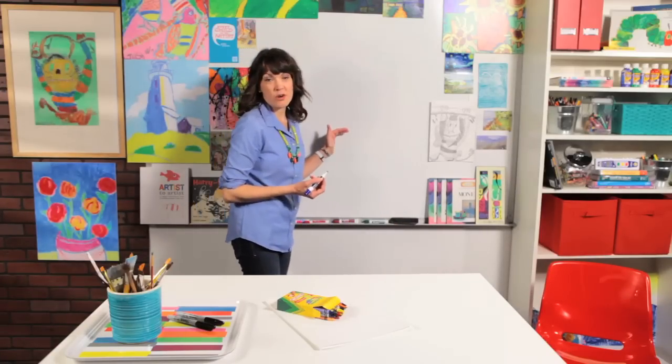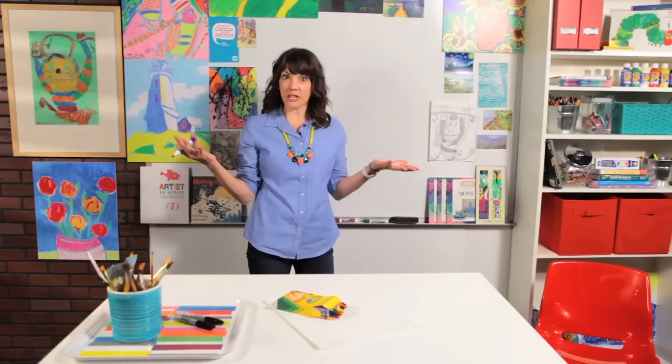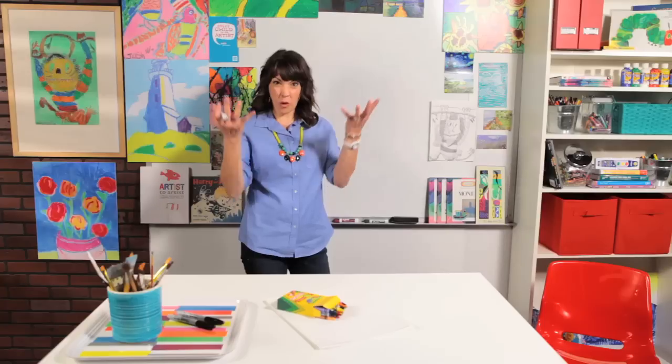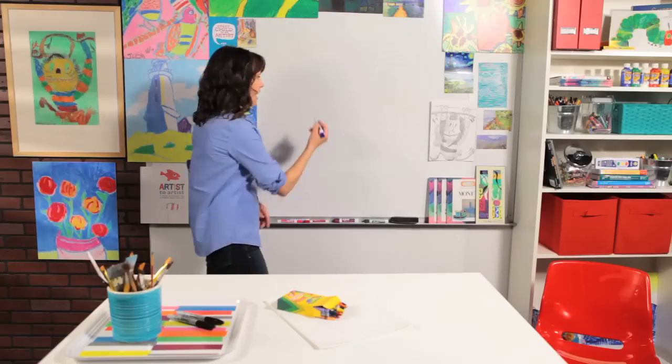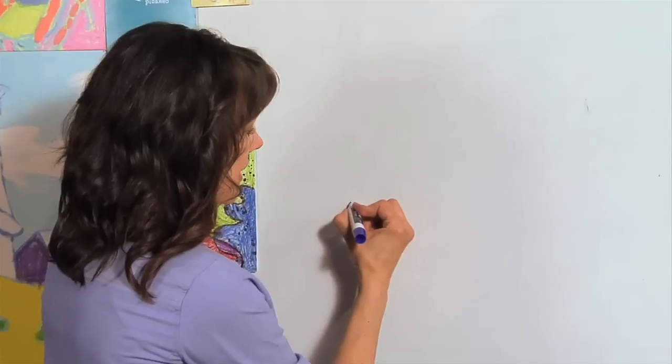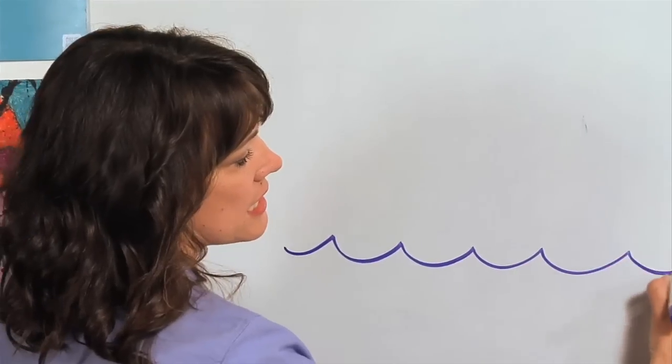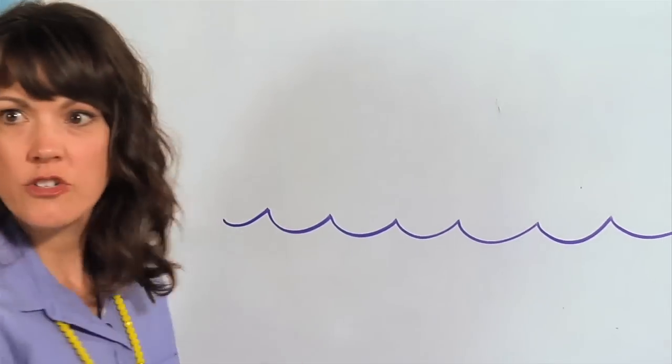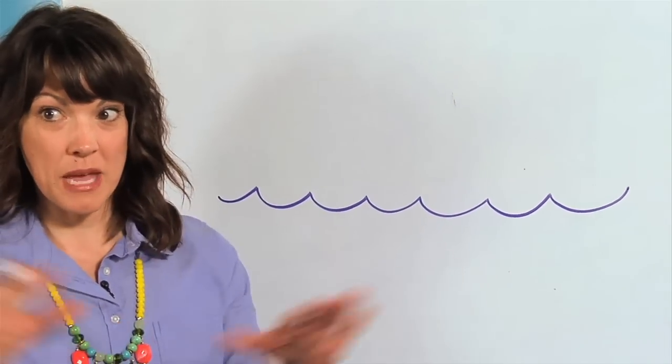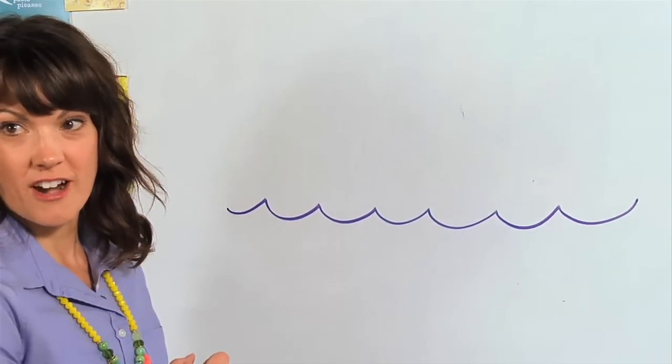The first thing we're going to do is actually draw the water line because boats aren't just floating in the sky, they've got to be in the water. And they sink down because they're heavy, so they're in the water kind of deep. So let's draw a wavy line and it's just like this, up, up, up with your curves. And there is our water line. And you want to draw it all the way from one edge of the paper to the other. It's called the horizon line so that we get the whole ocean there.